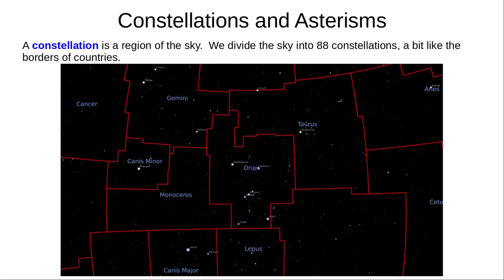A constellation, Latin for 'set of stars', is in modern astronomy a region of the sky. We divide the entire sky into 88 constellations, which look a bit like the borders of countries. The red borders here follow straight lines, and when viewed on the spherical sky rather than a flat projection, every corner is a right angle. Each straight line follows a line of equal right ascension or a line of equal declination. See my celestial coordinates video for an explanation of these. This is similar to state lines in the USA, which follow lines of equal longitude or latitude, except that state lines often curve due to rivers or politics — we don't have to worry about politics and geography in the sky.